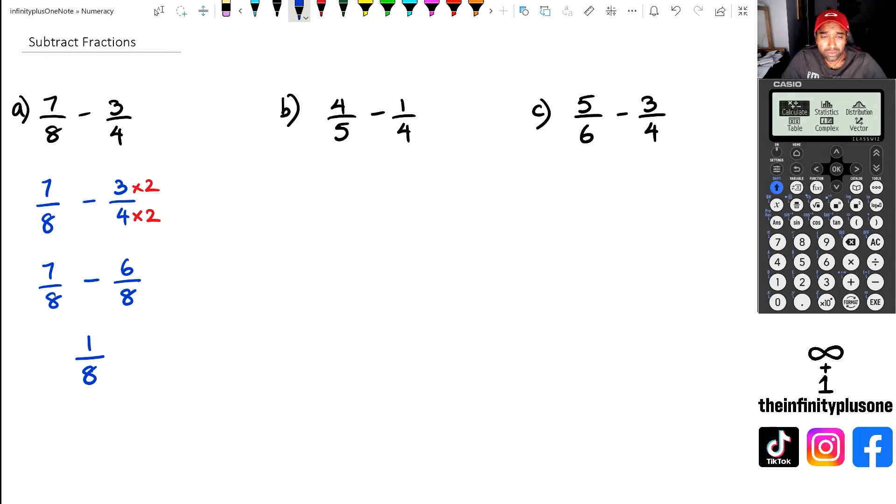Looking at question B, we've got 5 and 4. With 5 and 4, the lowest common multiple is 20. So we've actually got to change both of these fractions. We're going to take 4 over 5 minus 1 over 4, and I want to change that 5 and 4 to 20.